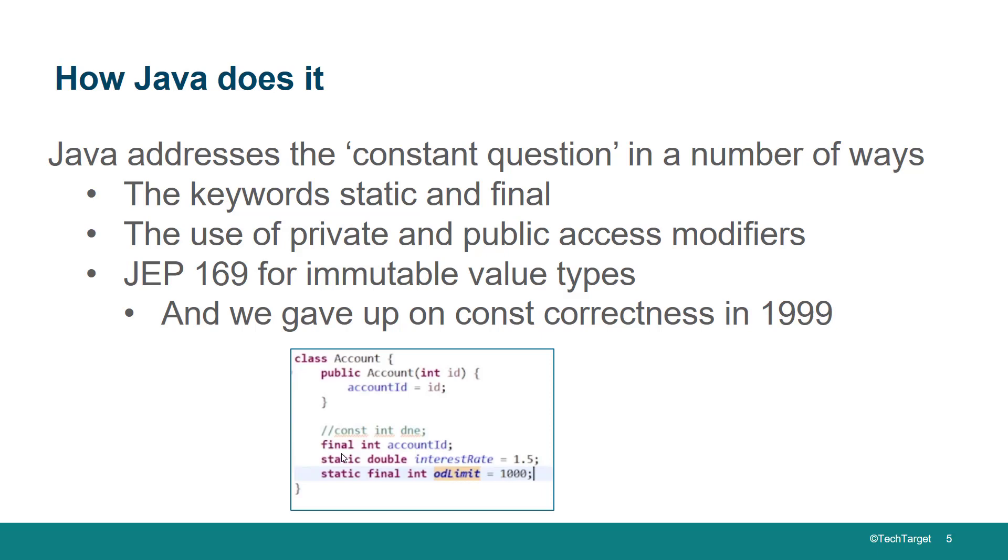Most people are familiar with static and final. Static and final means that not only can the value not change, but it's also the same for every instance of the class. So a final variable, maybe you've got a bank account and there's a final variable for account ID. That means every individual account is given an account ID that can't change.